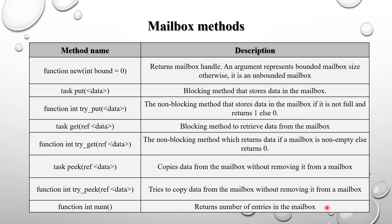The last method is num: function int num(). It returns the number of entries currently in the mailbox. You can use the num method to find how many elements are present in the mailbox. These are all the methods available in mailbox. In the next video we will see the difference between queue and mailbox, and we will see some examples.